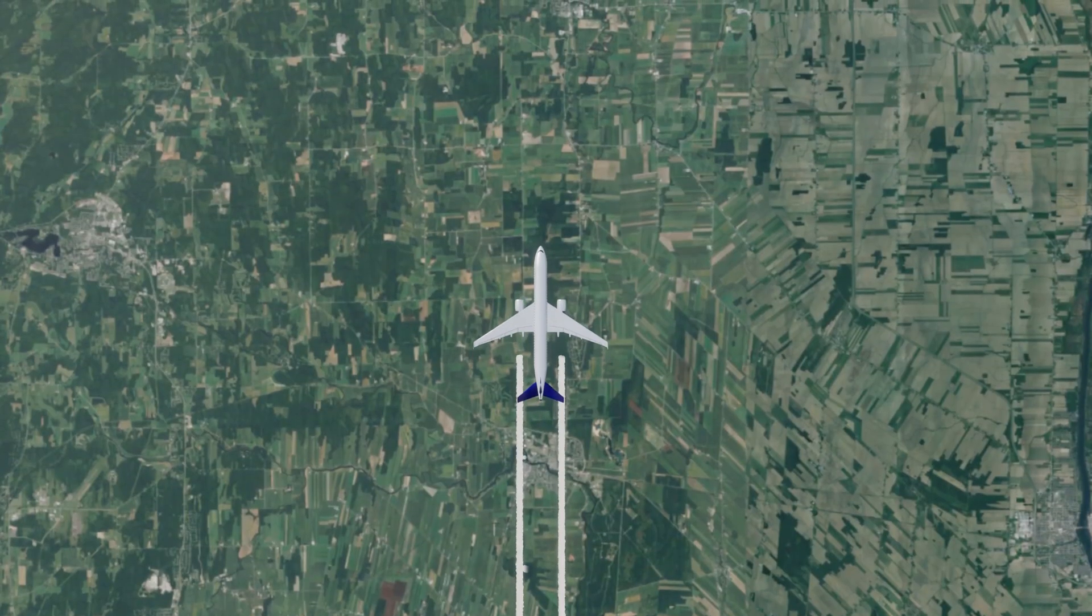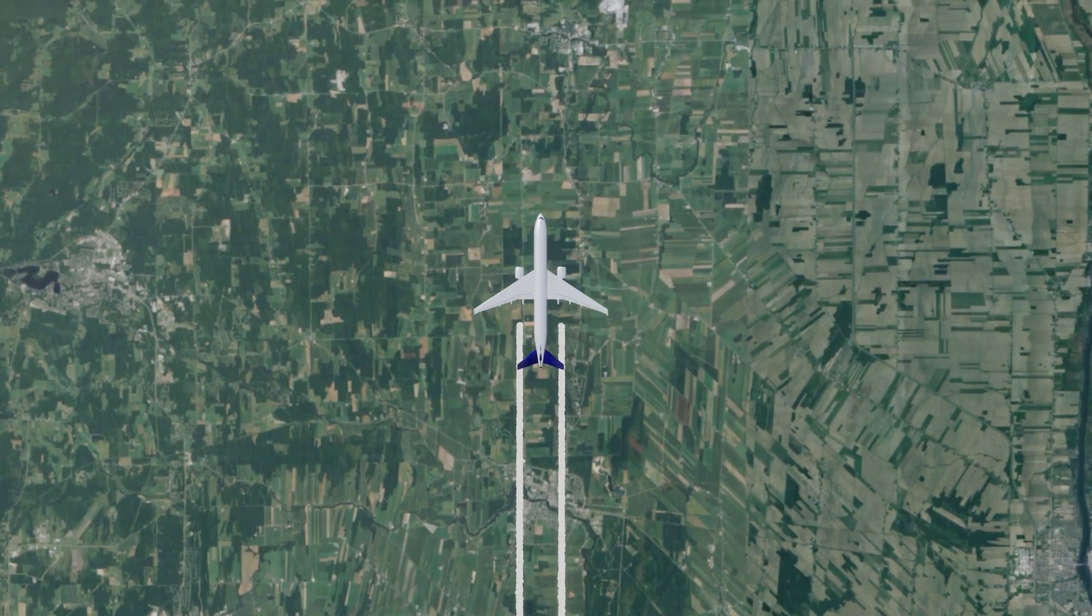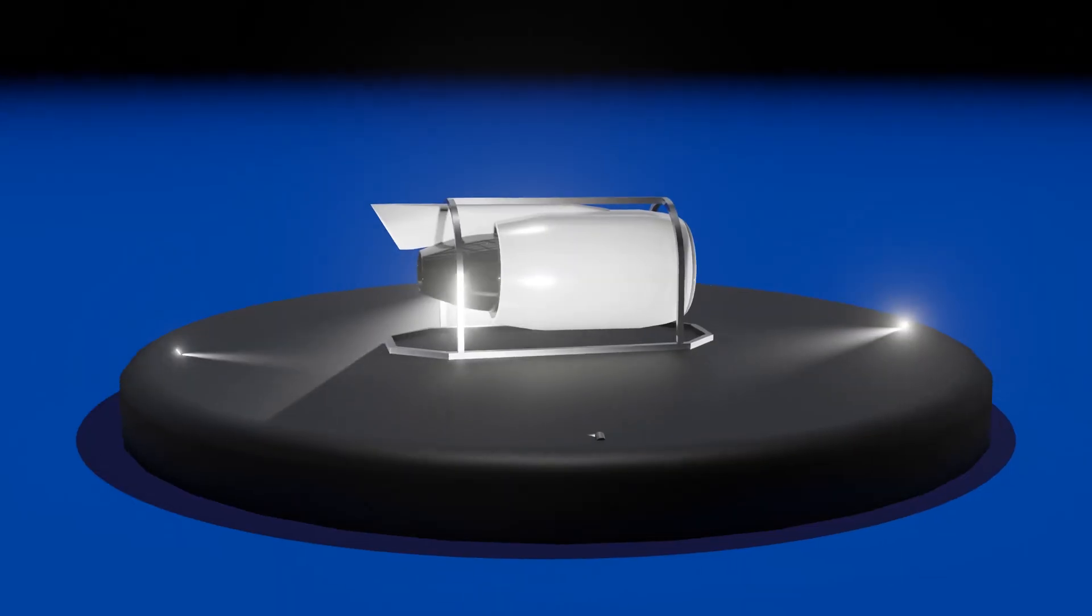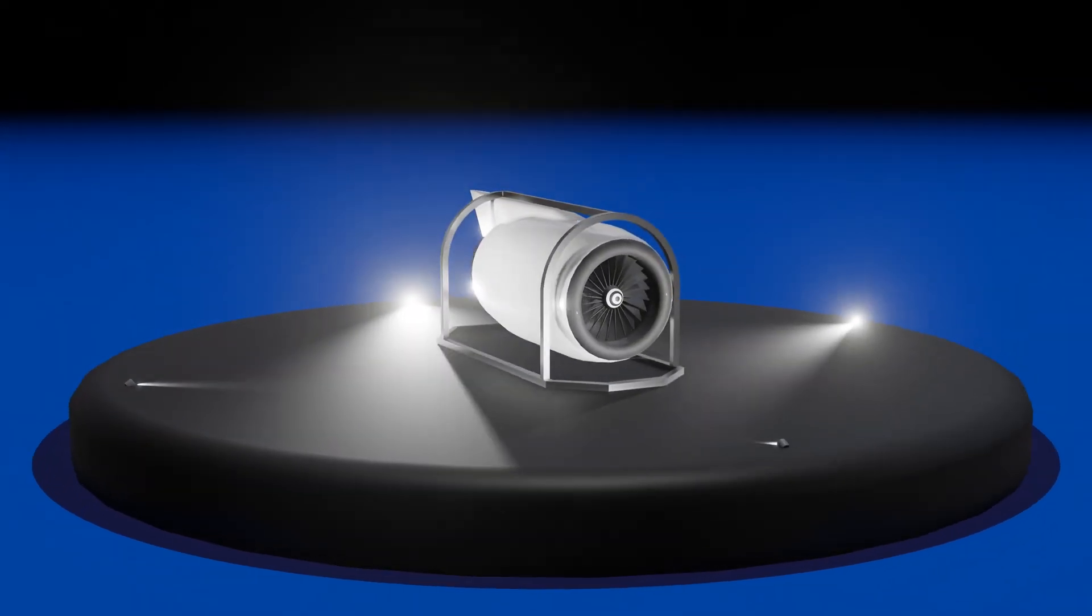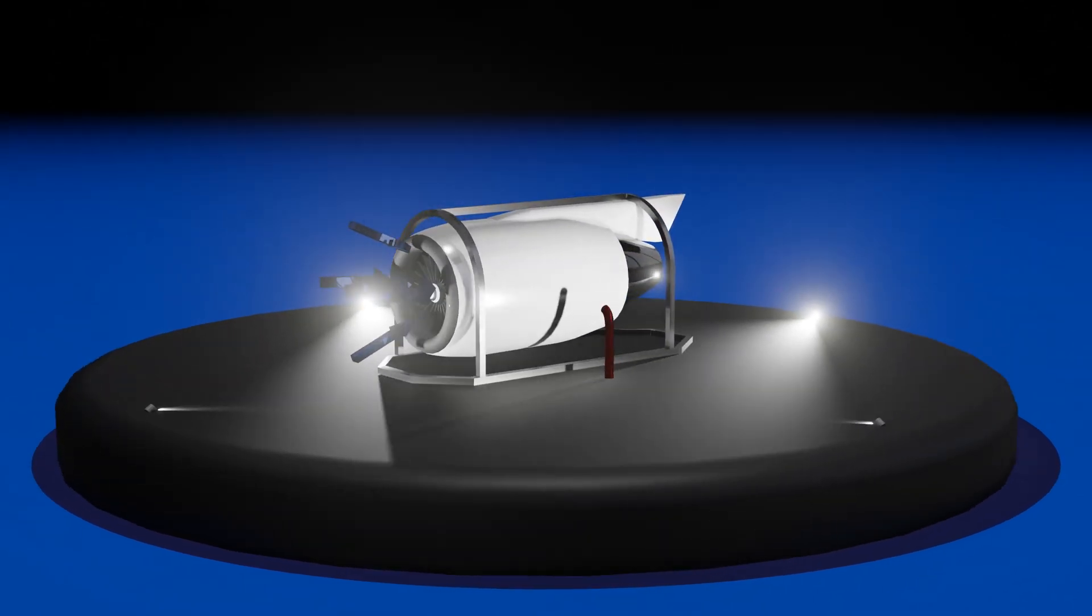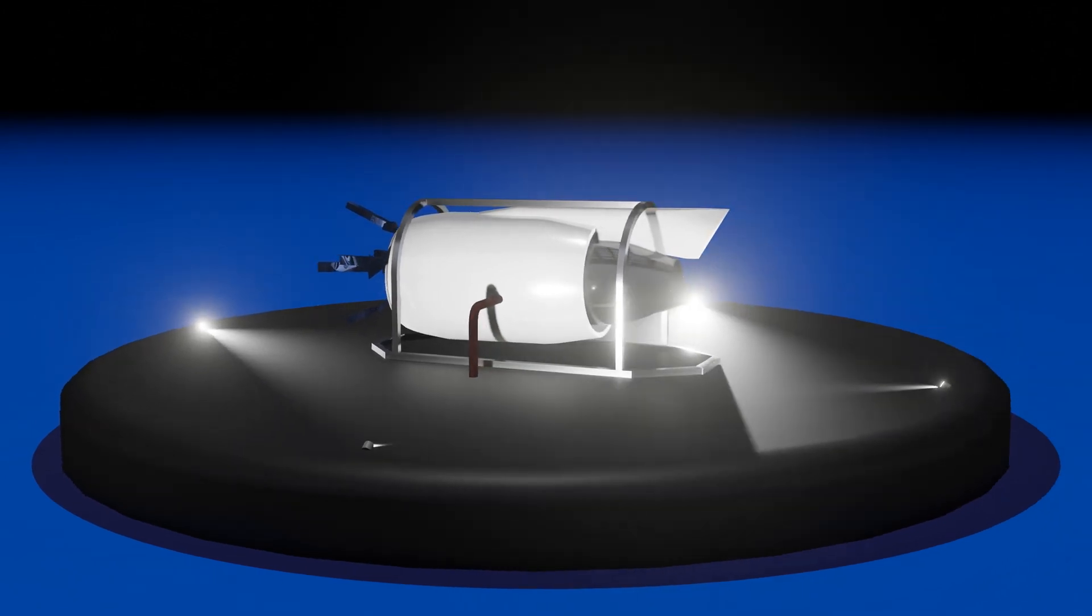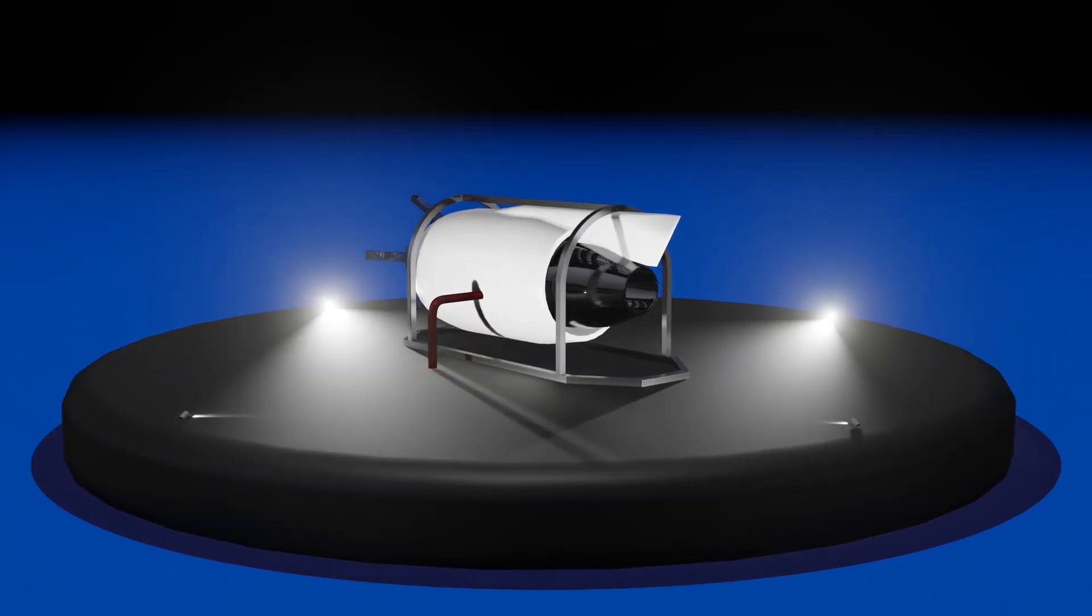The first step in understanding what these trails are that are produced from jet engines is to review the combustion process of the jet engines themselves. A jet engine will suck in oxygen from the atmosphere and mix it with kerosene pumped from its fuel tanks. This combustion process results in an exhaust that is expelled out of the engine at very high temperatures.